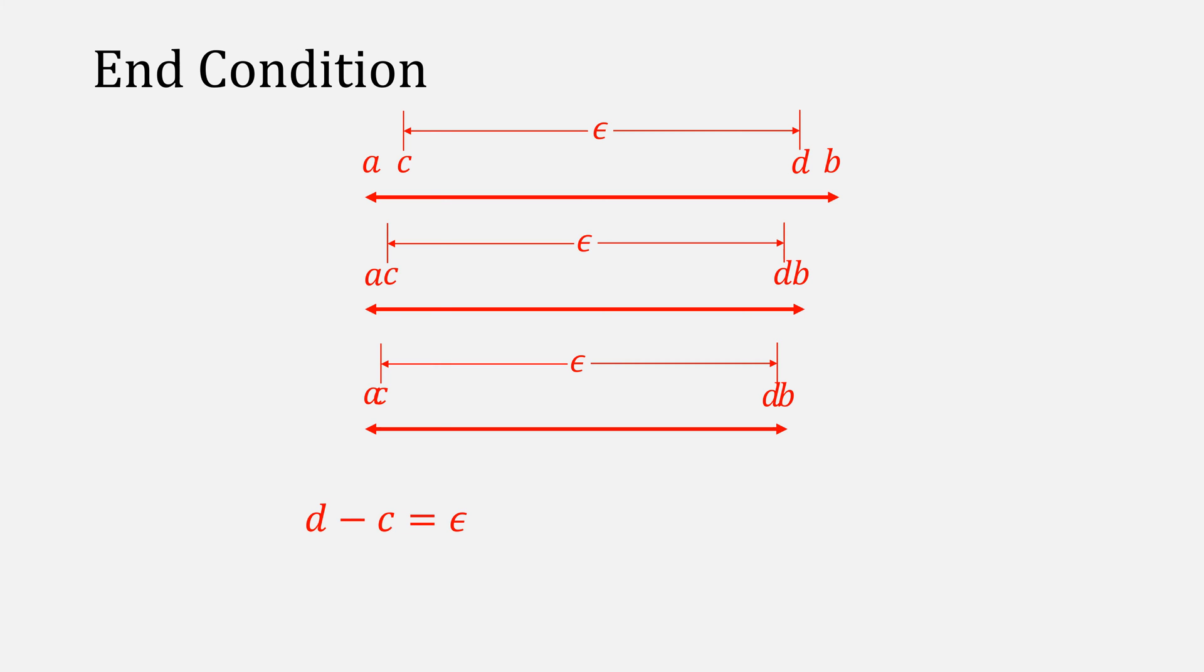Because D minus C is always equal to epsilon, and A is always less than C, and D is always less than B, our usual end condition of B minus A less than epsilon isn't going to work. We'll instead want to use B minus A over 2 less than some epsilon.